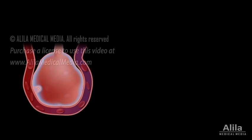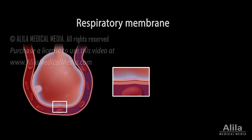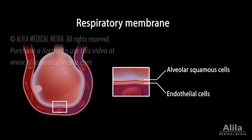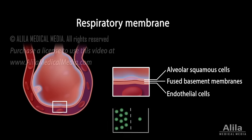In the lungs, the gases move across a very thin respiratory membrane which consists of alveolar squamous cells, endothelial cells of blood capillaries, and their fused basement membranes. The exchange of gases occurs due to simple diffusion as they flow down their concentration gradient or partial pressure gradient.